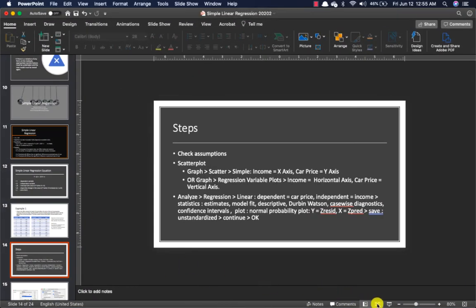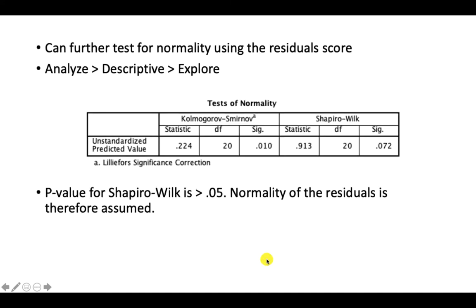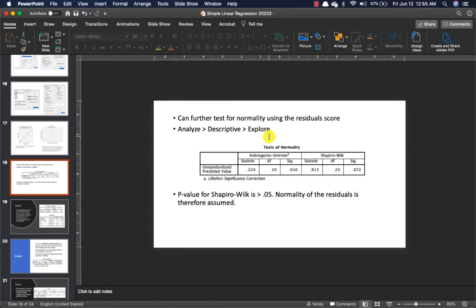The normal PP plot shows residuals are normally distributed, there seem to be no outliers, and all points are within plus or minus three. There is no systematic pattern in the scatter plot, so assumptions of linearity, homoscedasticity, and independence of residuals are all met. You can also further test for normality using the residual scores: go to Analyze > Descriptive > Explore and test for normality. The p-value for Shapiro-Wilk is more than 0.05, so normality of the residuals is therefore assumed.